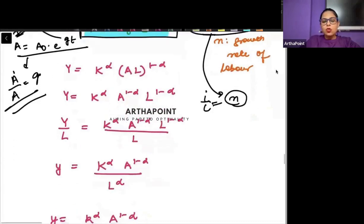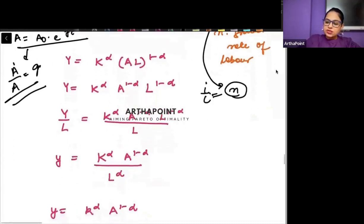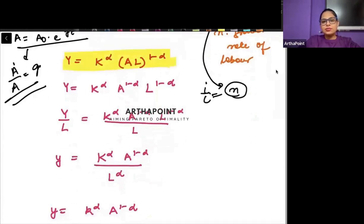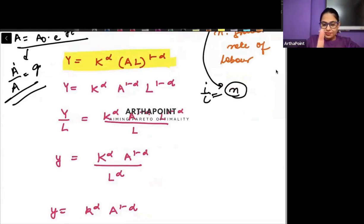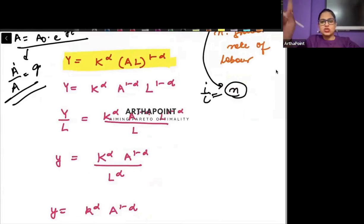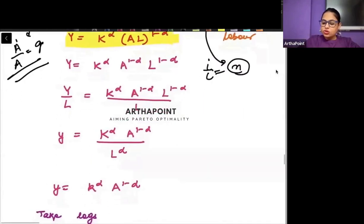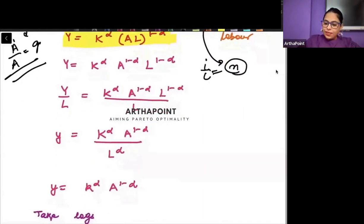I am leaving it up to you to verify this — just as we derived L-dot by L equals N, you can try and find that you will get A-dot by A as G. Now, with this production function in mind, I am going ahead and dividing throughout by L — not by AL. Currently I am just dividing throughout by L.